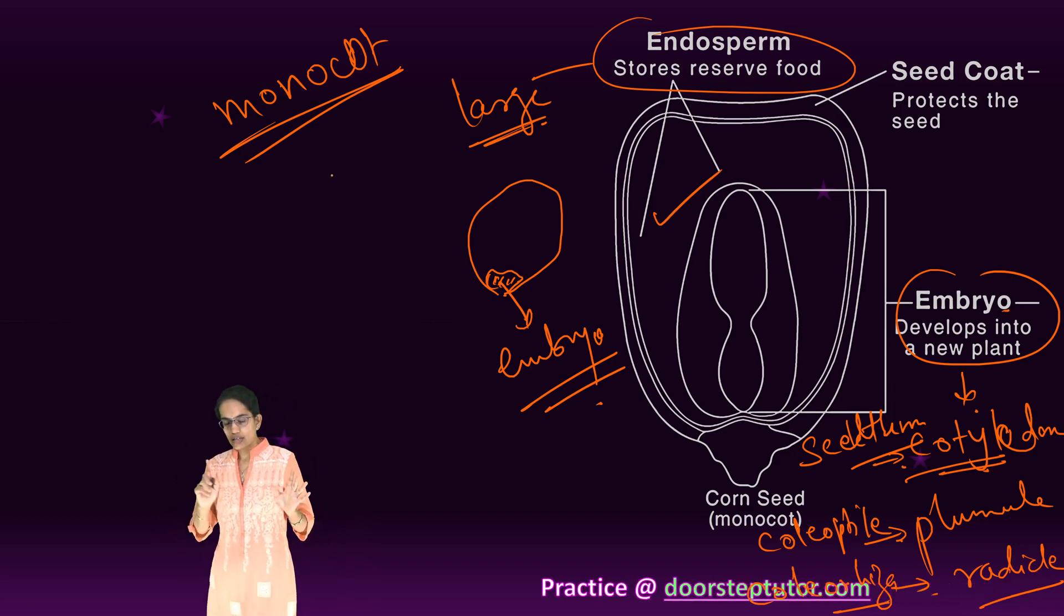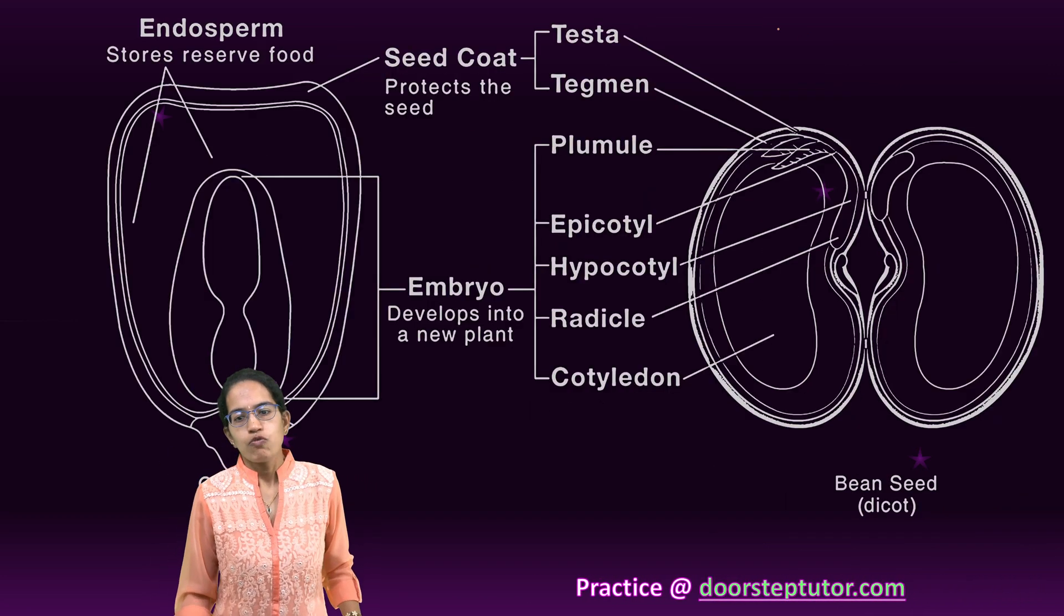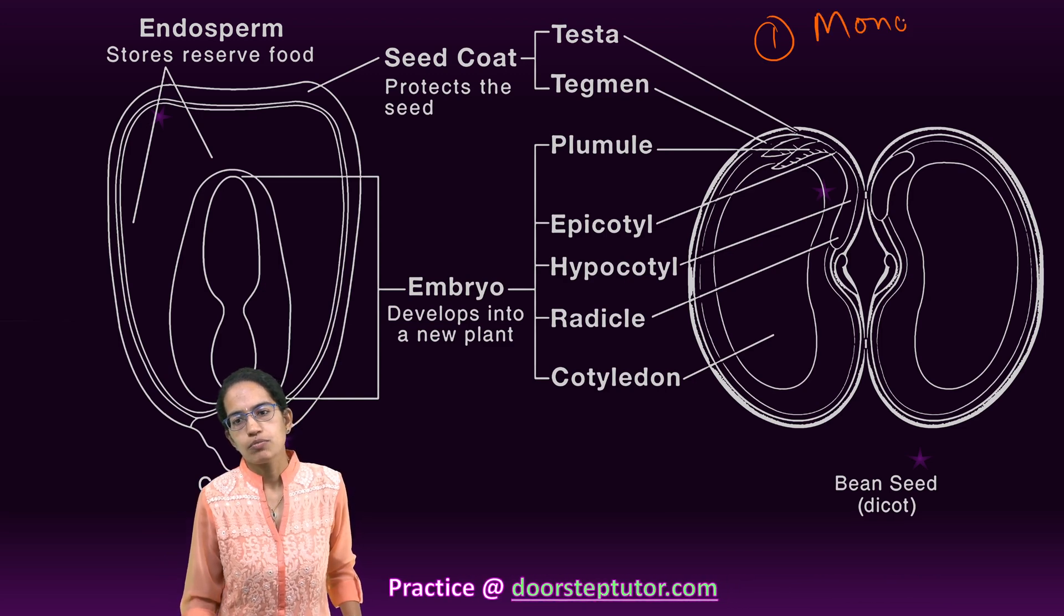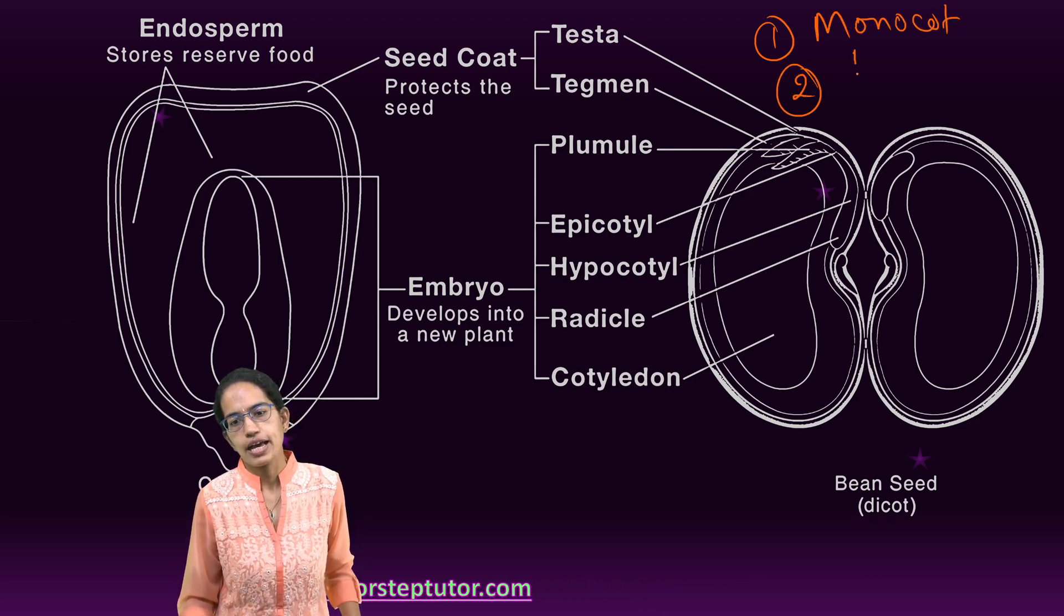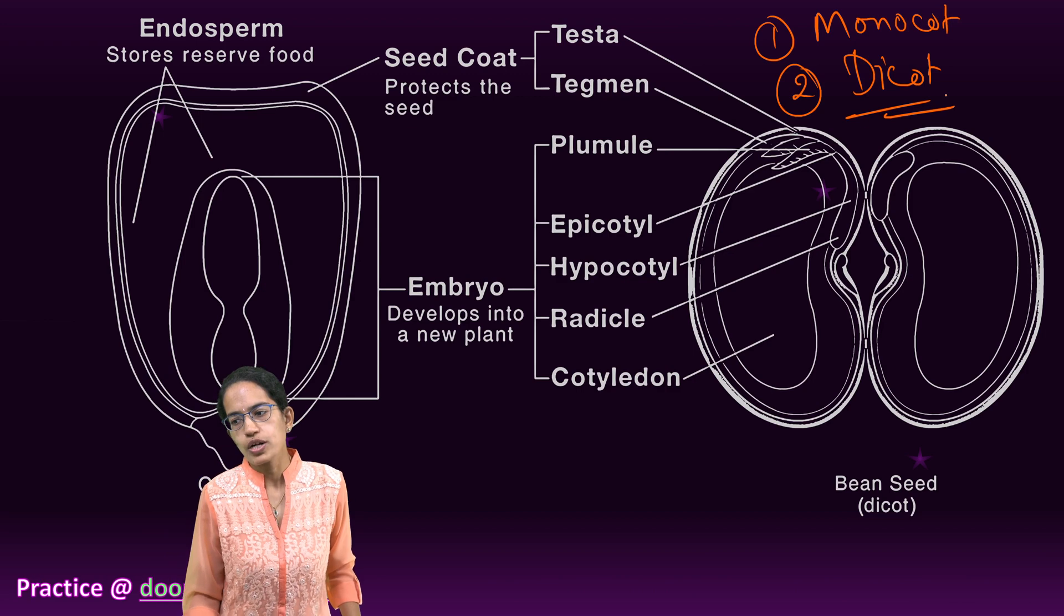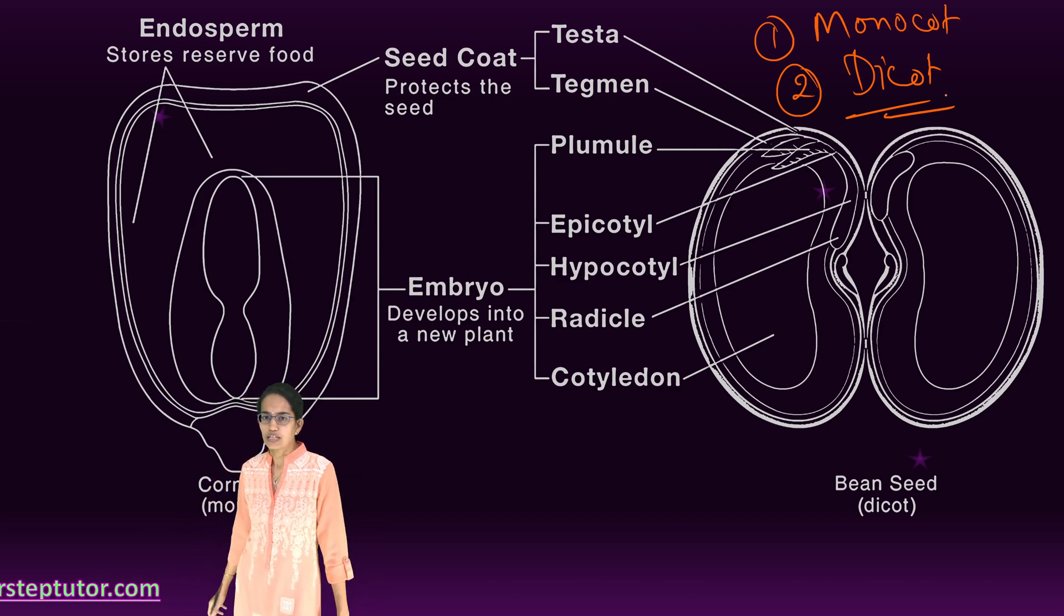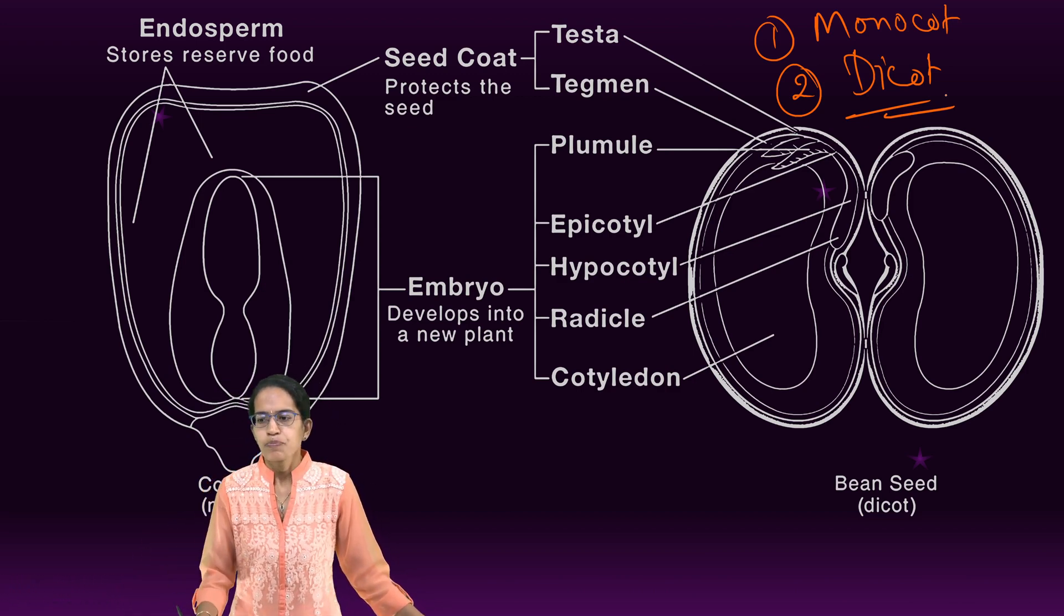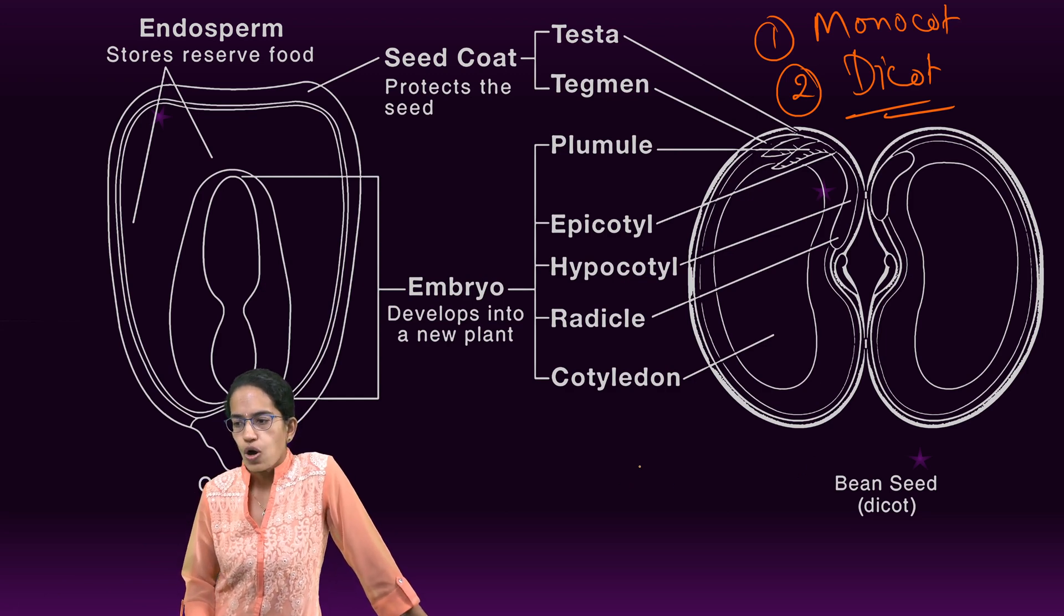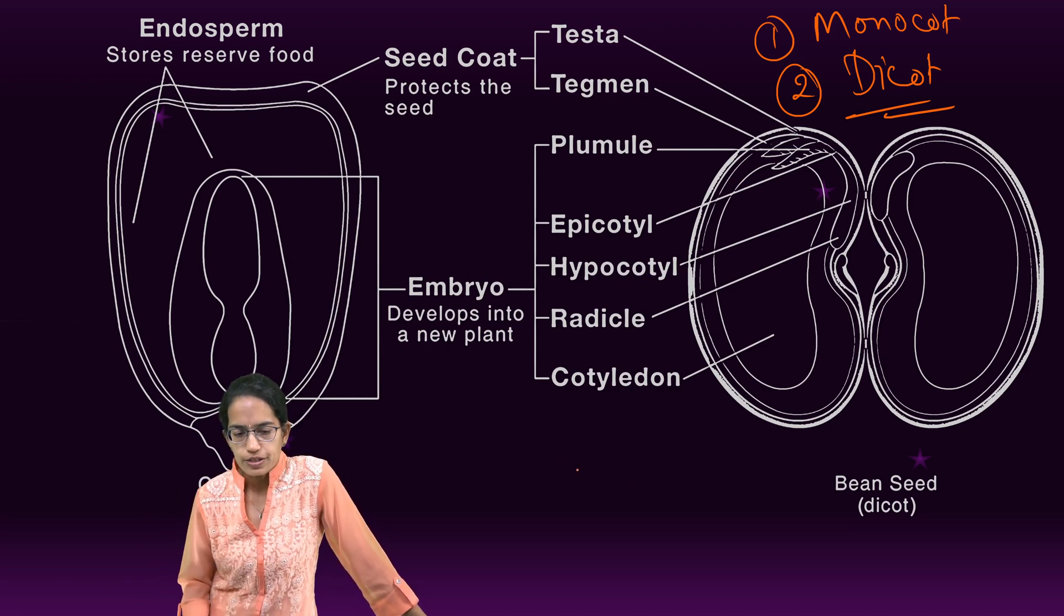So that's one another difference. Now, the types of seed. One important classification is monocot and dicot. Monocot is maize, rice, wheat. Dicot is peas and beans.